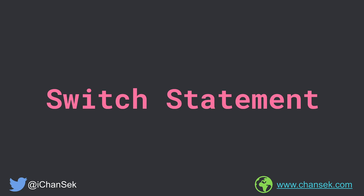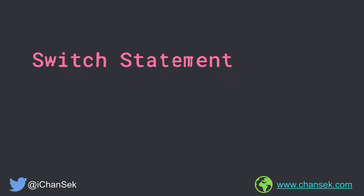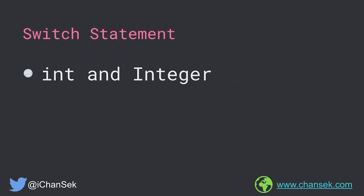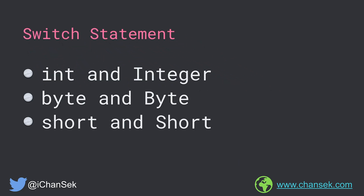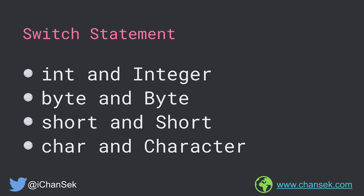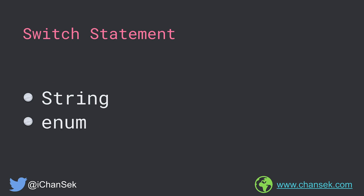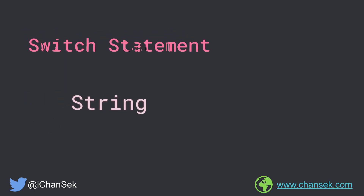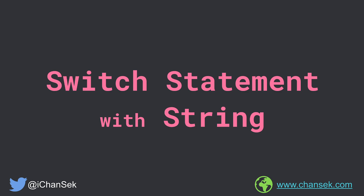Switch statements in Java support limited data types and they are integer, byte, short, and character. In addition to these primitive data types and wrapper data types, they also support string and enum. Switch statements started supporting string data type from JDK7, and in this video we are going to see switch statements with string data type.